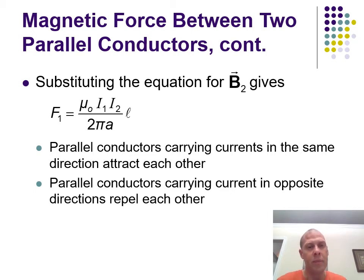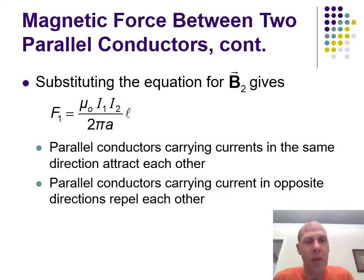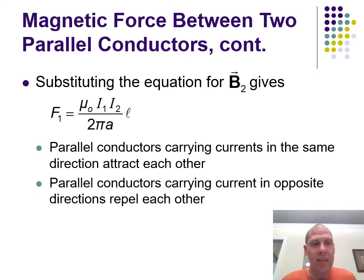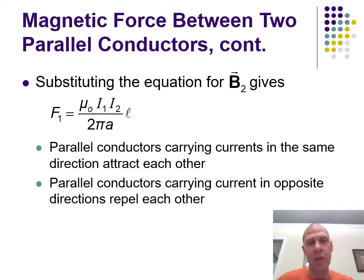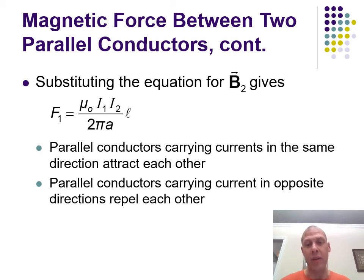Substituting in the Biot-Savart result, the force on wire two equals μ₀I₁I₂L / (2πa), where L is the length of the wire in question and a is the distance between the wires. The I₂L part comes from the force on a charge moving through a magnetic field, and the μ₀I / (2πa) part comes from the magnetic field generated by the other wire. Again, a wire cannot generate a magnetic field that exerts a force on itself, but it can exert a force on another wire.